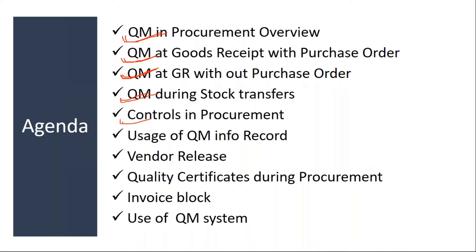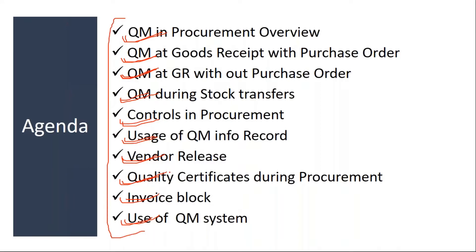Then controls in procurement. Then usage of quality info record — what is a quality info record and how it is used. Then vendor release — how to release the vendor from a quality perspective. Then handling the quality certificate during procurement, how to handle the COA or COC certificate receipt in the system during procurement. Then invoice block — blocking the payment to the vendor. Then use of quality systems, the QM system. These are the topics we will be covering in QM in procurement.